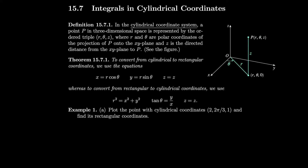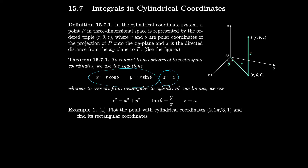We define cylindrical coordinates using a point in three-dimensional space represented by the ordered triple (r, θ, z), where r and θ are polar coordinates of the projection of the point onto the xy-plane, and z is the directed distance from the xy-plane to the point. So z stays the same, and x and y are the same as they were in polar — converting uses the same formulas for r and θ, but z is just z.